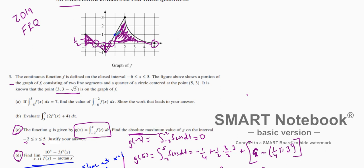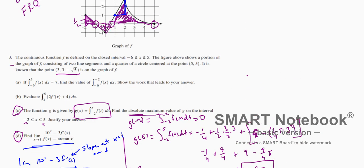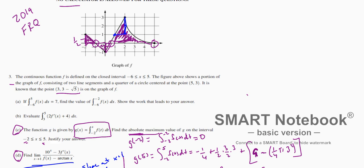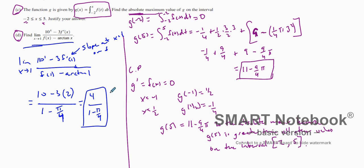F prime of one means the slope at x equals one on the graph of f. Looking at the graph at x equals one, the slope goes up two over one, so f prime of one equals two. On the denominator we have f of one, which equals one — we can read that from the graph. And arctangent of one equals π over 4 from the unit circle. So we get 10 minus 6, which is 4, over 1 minus π over 4. That is our solution.